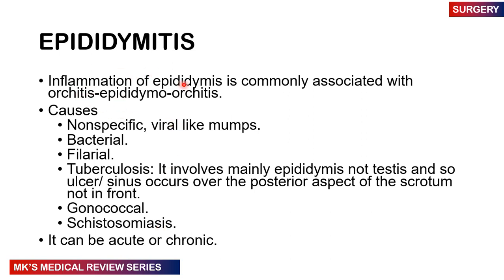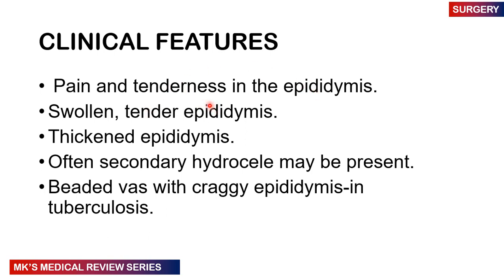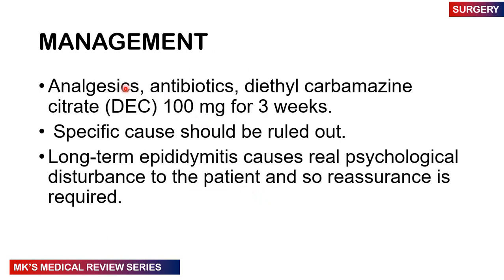With epididymitis, inflammation of the epididymis is commonly associated with orchitis — epididymo-orchitis. Causes include nonspecific viral infections like mumps, bacterial, filarial, and TB — which may involve mainly the epididymis rather than the testes, producing an ulcer or sinus over the posterior aspect of the scrotum. You may also have gonococcal infection and schistosomiasis. Epididymitis can be acute or chronic. Clinical features include pain, tenderness, swelling and thickening of the epididymis, and often a secondary hydrocele. A beaded vas deferens with craggy epididymis is seen in TB. Management includes analgesia, antibiotics, and diethylcarbamazine citrate 100mg for three weeks, also used in orchitis. Specific causes should be ruled out. Long-term epididymitis causes significant psychological disturbance, so reassure the patient whenever possible.